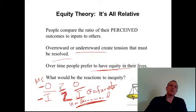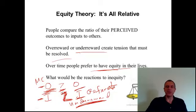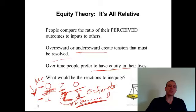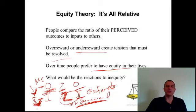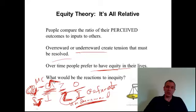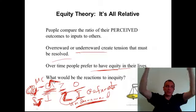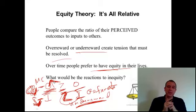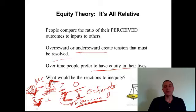Looking at it as a logical mathematical equation, what are some reactions to inequity — to not getting a fair shake and being under-rewarded? One thing I might do is reduce my inputs — I might work less. Or I might try to increase my outcomes by going to ask the boss for a raise. If I compare myself to Joe and I'm under-rewarded, I'm going to try to boost my outcomes, ask for a raise, or maybe even do something like steal. Or knowing I can't change my pay, I simply reduce my inputs.